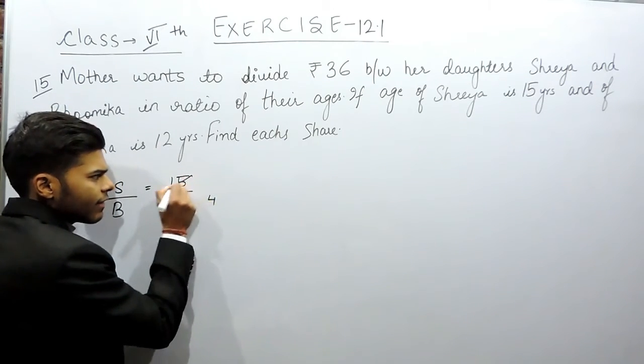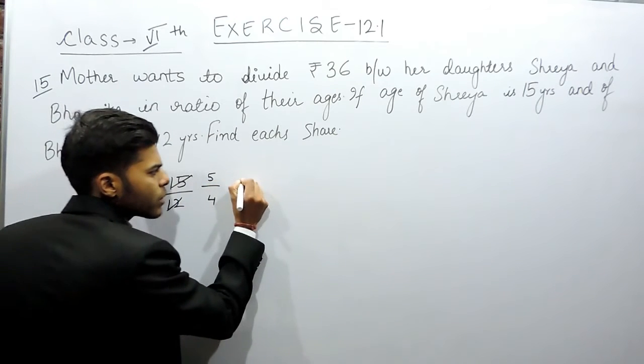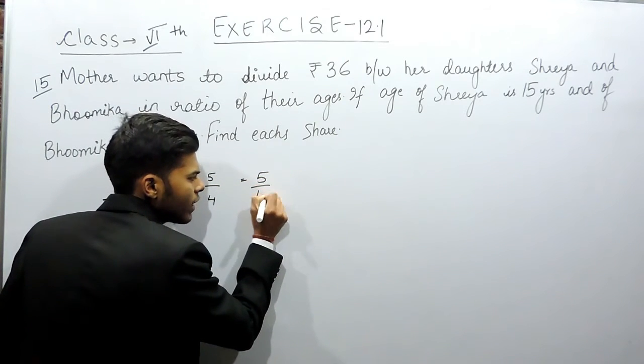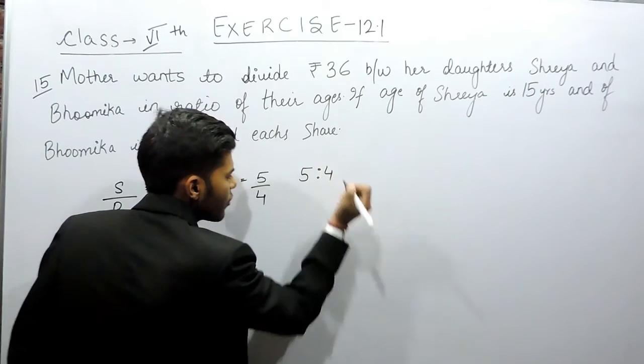Dividing both by 3, we get 5 by 4, or we can say in the ratio 5 ratio 4.